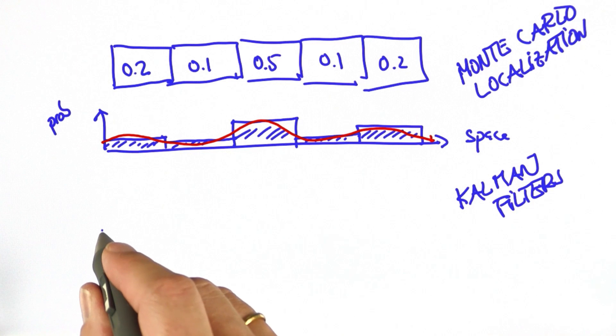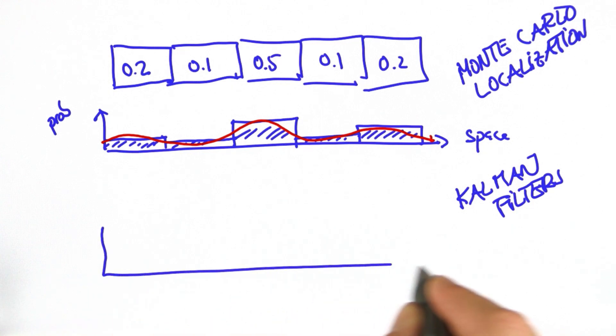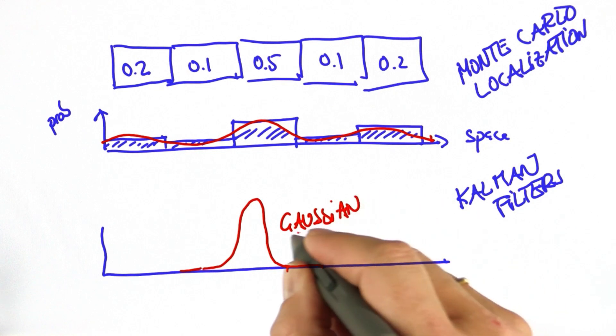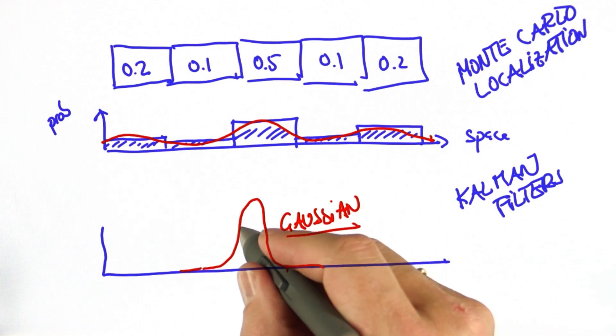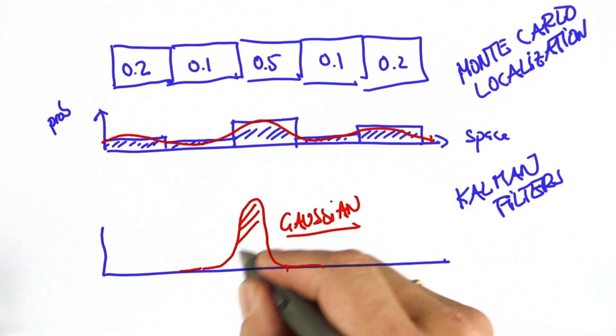In Kalman filters, the distribution is given by what's called a Gaussian. A Gaussian is a continuous function over the space of locations and the area underneath sums up to 1.